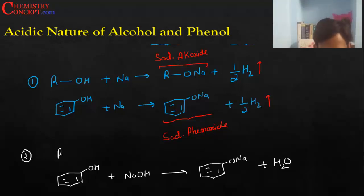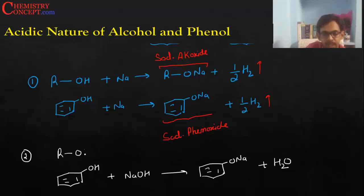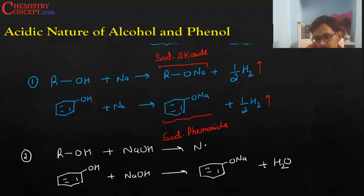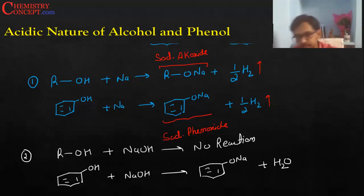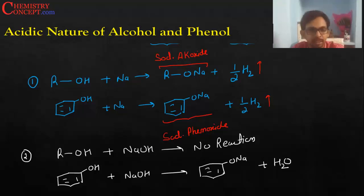This is the second reaction which proves that phenol is acidic — anything which reacts with a base to form salt and water must be an acid. But there is a small twist here: alcohol does not react with NaOH in this way.